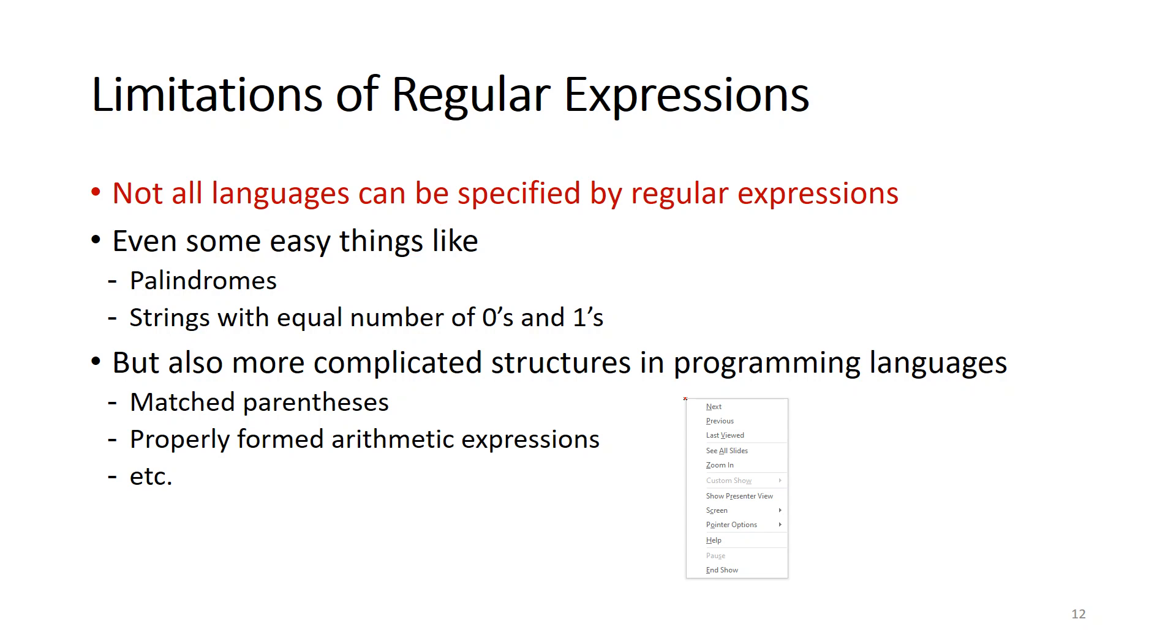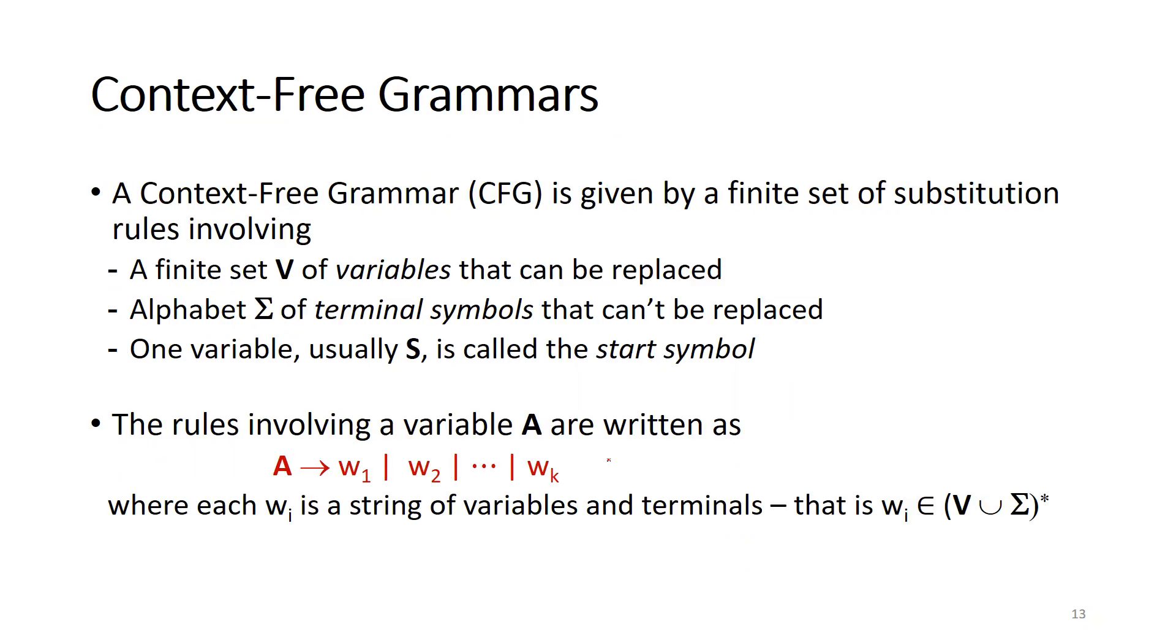We cannot do some easy things like a palindrome string with equal number of zeros or equal number of ones. We cannot use this for a little bit complicated structures in programming languages to match parentheses and properly formed arithmetic expressions. That's why we need context-free grammars.